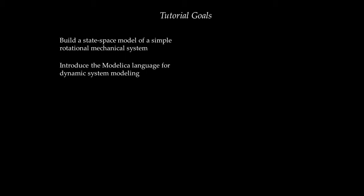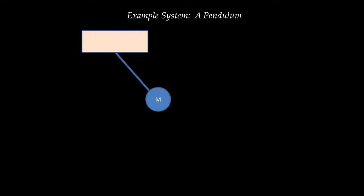I'm going to start with the first goal: building a state-space model of a very simple rotational mechanical system — essentially a pendulum. There is a fixed foundation, and attached to it is a pendulum of mass M and length L. The pendulum is acted upon by an external torque U of T applied via a shaft. I'm interested in how the pendulum oscillates both freely and under the influence of this torque, and specifically in the angle between the pendulum and the vertical, which I call Y of T.